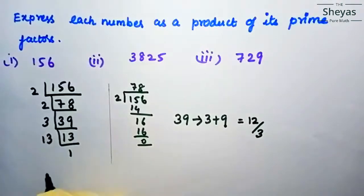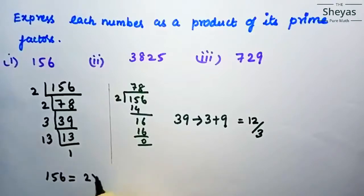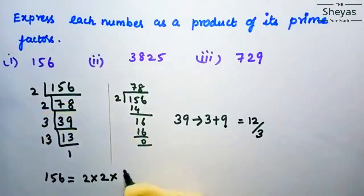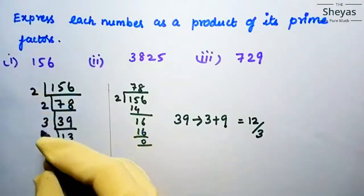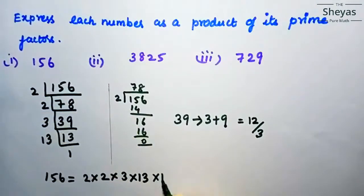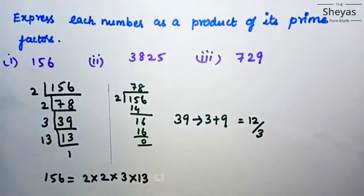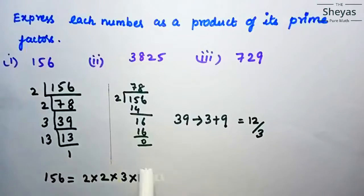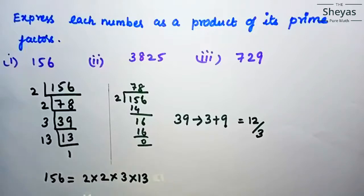So now I am going to write 156 as a product of prime numbers: 2 into 2 into 3 into 13. So 156 can be written as 2 × 2 × 3 × 13, and these are the prime factors of 156.